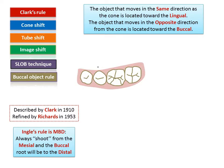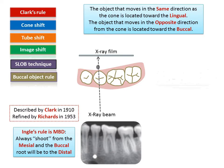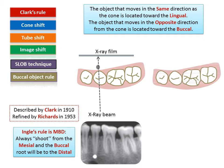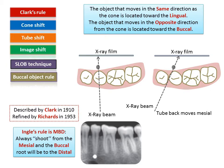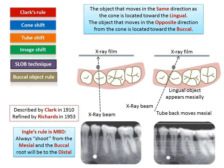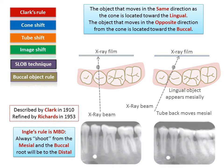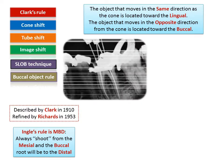For example, in the lower jaw, suppose there is an object placed lingual to the mandibular second premolar. When we shoot the x-ray from the buccal aspect, we cannot determine whether the object is buccal or lingual. When we move the tube head mesially, the lingual object appears to move mesially in the radiographic image, now appearing between the first and second premolars. Since the object moved in the same direction as the tube head, we confirm it is lingual.